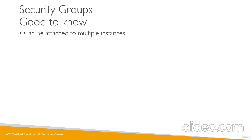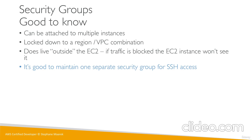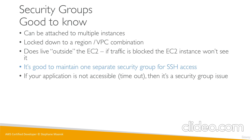Good to know: security groups can be attached to multiple instances, and an instance can have multiple security groups. Security groups are locked down to your region/VPC combination — if you switch to another region or create another VPC, you have to create new security groups. The security group lives outside the EC2 instance, so if traffic is blocked, the EC2 instance won't even see it — it's really a firewall outside your EC2 instance. It's good practice to maintain one separate security group just for SSH access. If your application is not accessible — a timeout — then it is a security group issue.